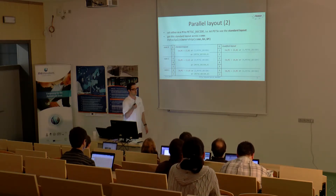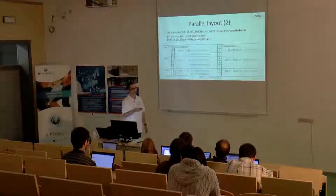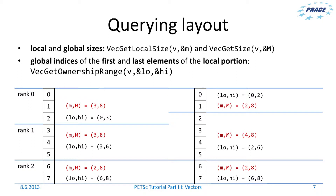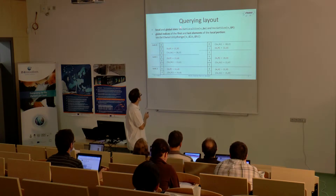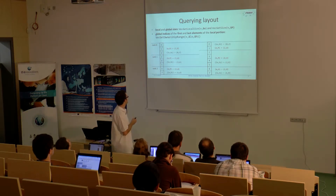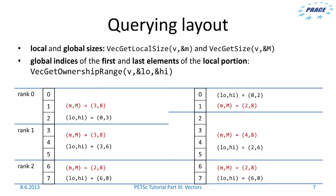You can also get this layout across a given communicator without a specific object by calling PetscSplitOwnership. You can also query the layout using these functions: for local sizes use VecGetLocalSize, for global sizes use VecGetSize. And if you want to get the global indices of the first and last elements of the local portion, you call VecGetOwnershipRange.